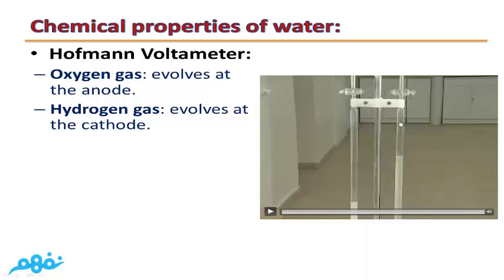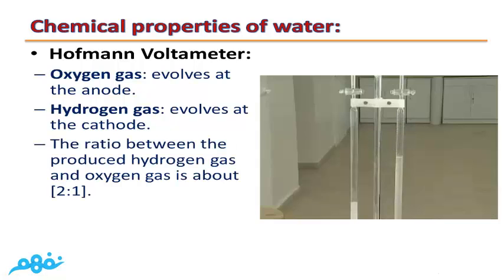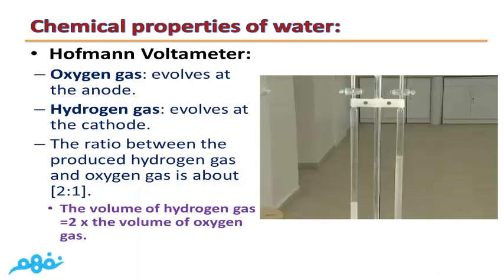The space at the cathode side represents the volume of hydrogen, while the space at the anode side represents the volume of oxygen. As you can see, the volume of hydrogen is twice the volume of oxygen. The ratio between the produced hydrogen gas and oxygen gas is 2 to 1, so the volume of hydrogen gas equals twice the volume of oxygen gas.